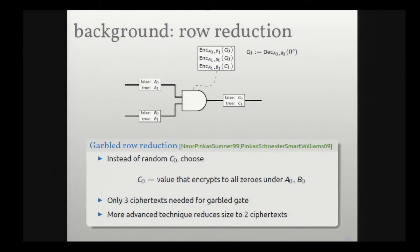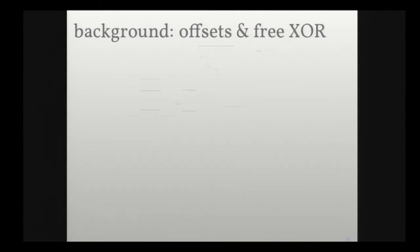There's another advanced technique due to Pincus et al. that further reduces the size of these garbled gates from four to two. I won't tell you how to do it, but for the purposes of the talk, we'll need to know that such a thing exists. So that's one way to reduce the size of a garbled circuit.